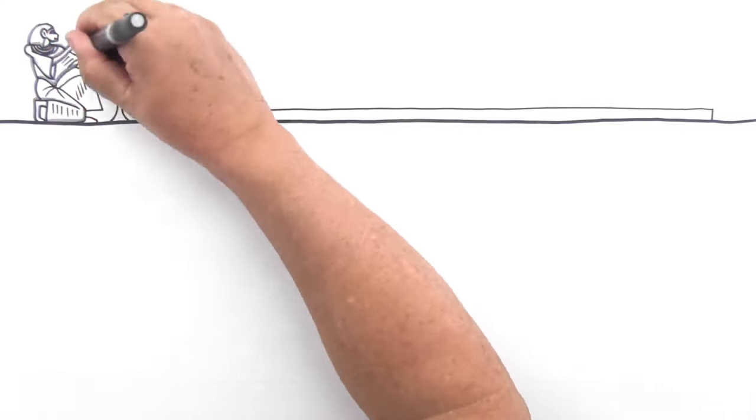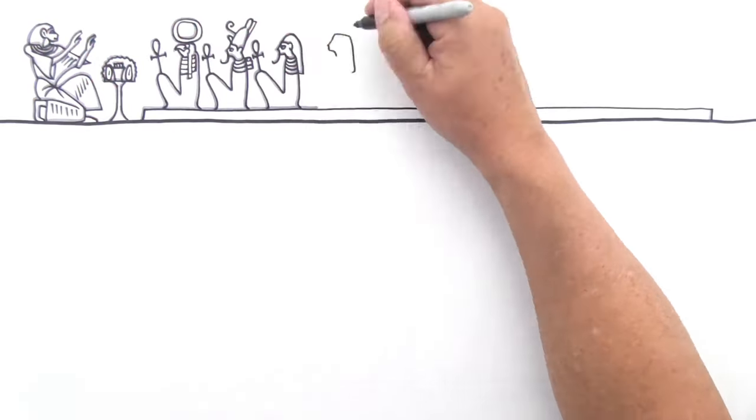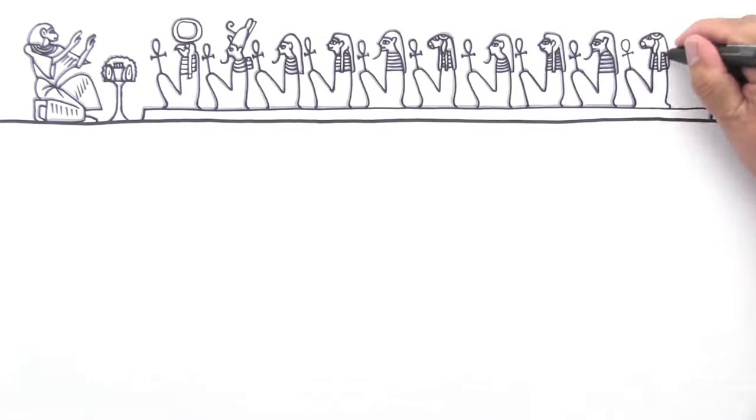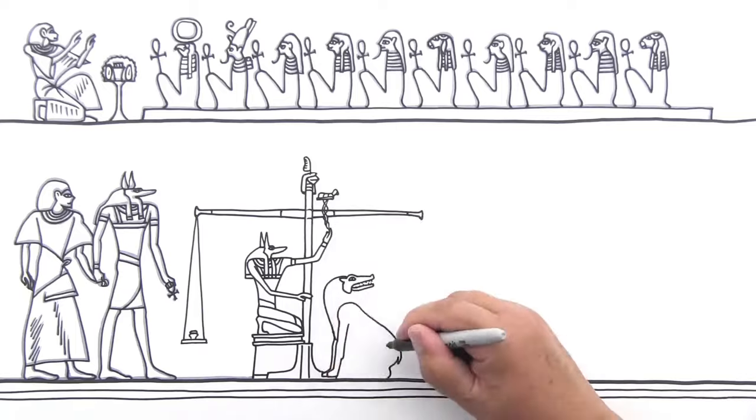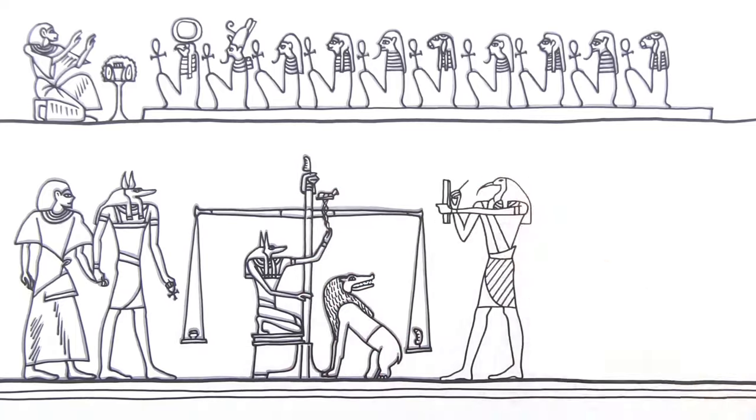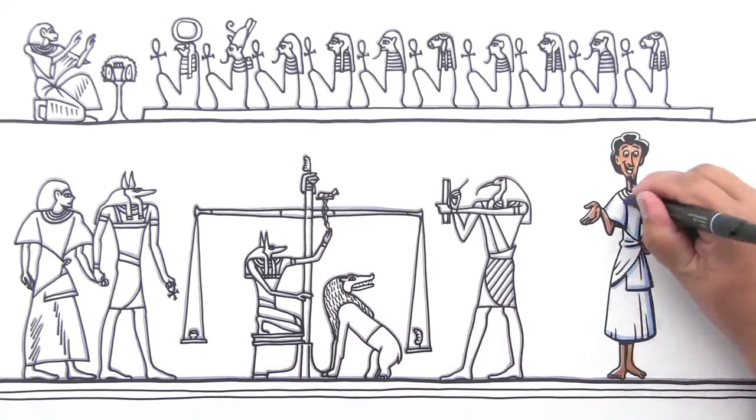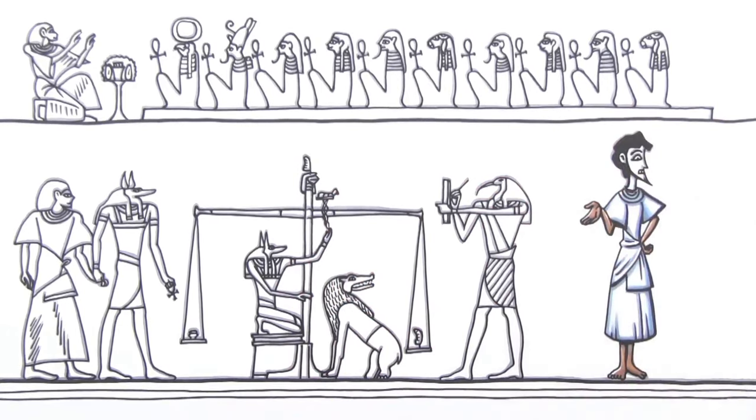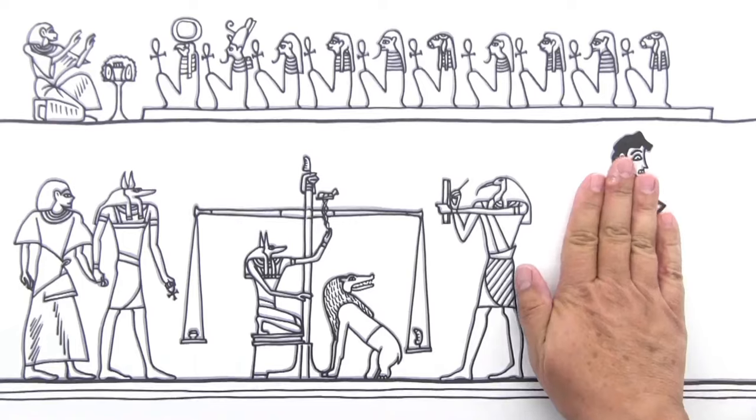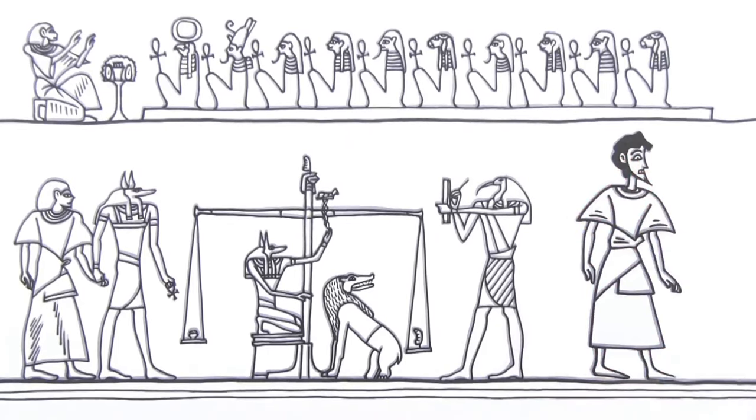Egyptians obsessed over death and the afterlife. Paintings on the walls of tombs often showed the ba, or soul, on its journey through the afterlife. When an Egyptian artist painted a figure, every body part was shown from its most recognizable angle. The face was shown in profile, except for the eye, which was shown head-on. The body was shown head-on. The legs and feet were twisted back into profile. Don't try this at home.